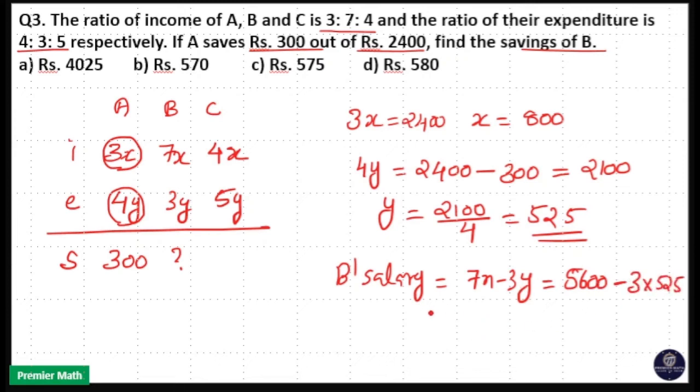That is 5600 minus 3 into 525 equals 1575. So 5600 minus 1575 gives us 4025.